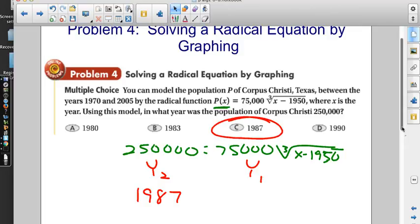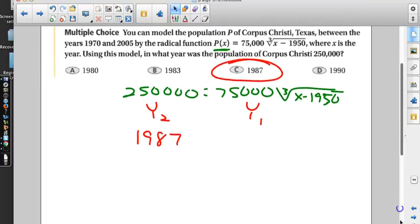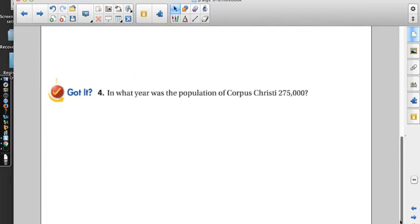Good thing that's one of our answers. Now, like I said, it's not that we couldn't have solved this by hand, it's just really nice when the numbers are really large. The next one says, in what year was the population of Corpus Christi 275,000? Go to it - change the one number you need to change and let me know what year you're looking at.